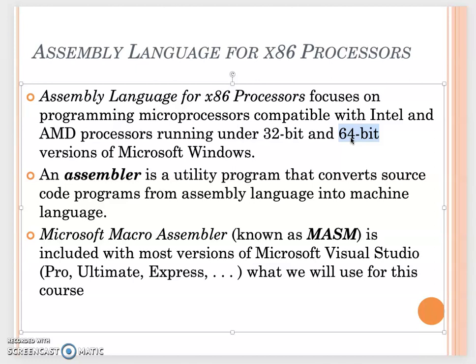The x86 assembly language is compatible with Intel and AMD processors. Even though we mostly use 64-bit environments now, in this class we will be using the 32-bit environment. The difference between the two is really just how large the space is to save a memory address — how they work is pretty similar in assembly language.